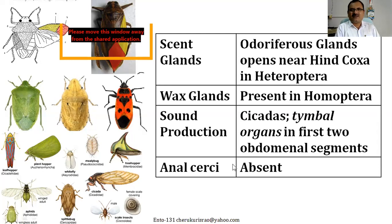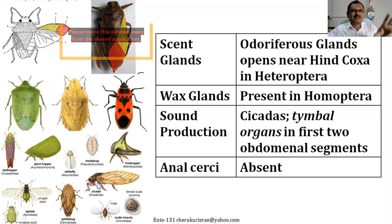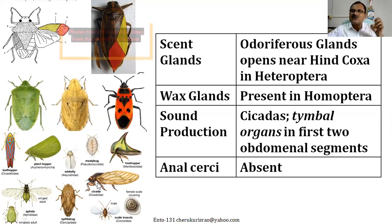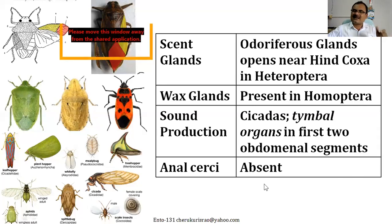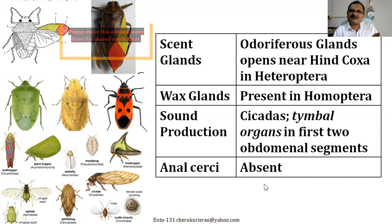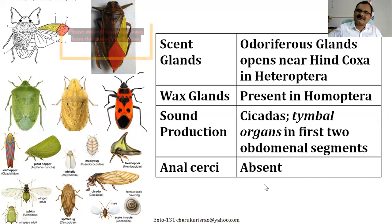Cicadas are found in many places — mostly on trees, especially near bark — and at night time when you visit silent forest places you'll hear their very huge, drum-like sounds. That sound production is always present in Hemipterans, especially in cicadas. The sound comes because they have a very thin cuticular layer in the first two abdominal segments that works like a drum. So when remembering insects under Hemiptera, four important things: piercing and sucking mouthparts, wing classification, scent/wax glands, and sound production in cicadas.